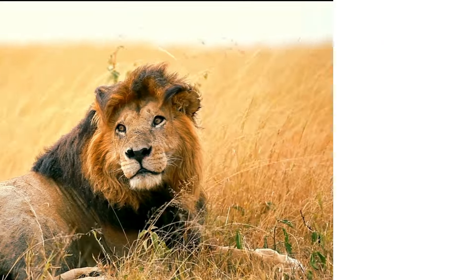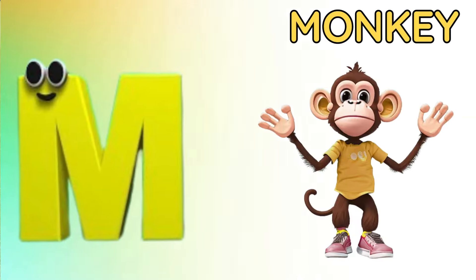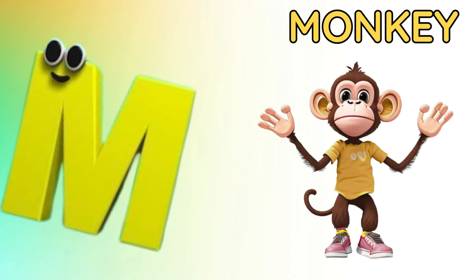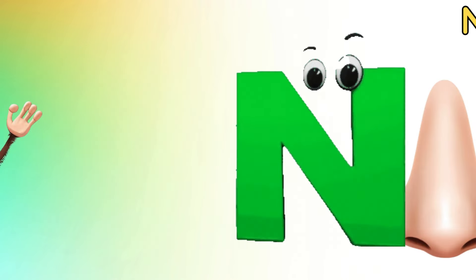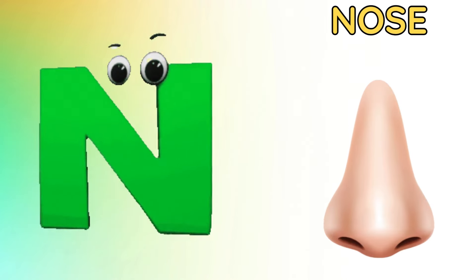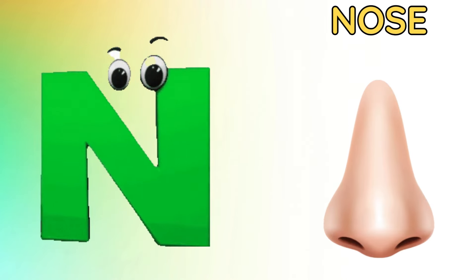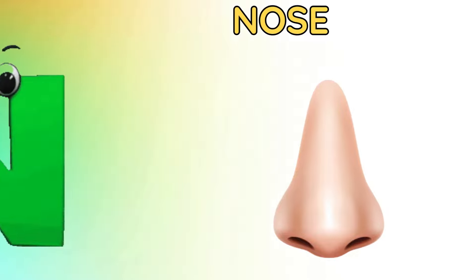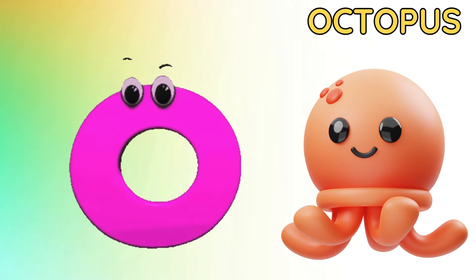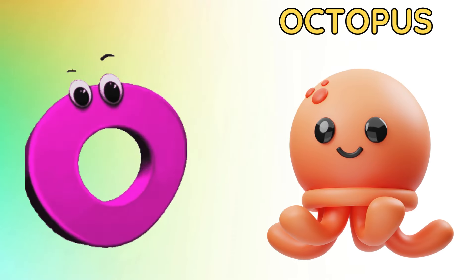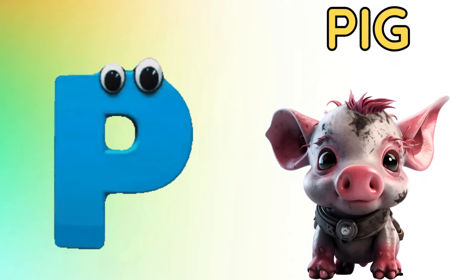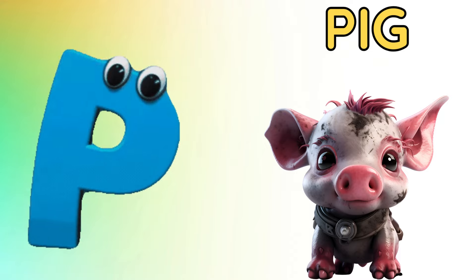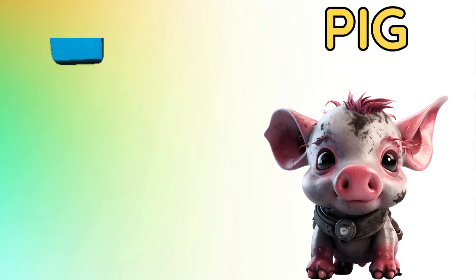M is for monkey, m-monkey. N is for nose, n-n-nose. O is for octopus, o-o-octopus. P is for pig, p-p-pig.